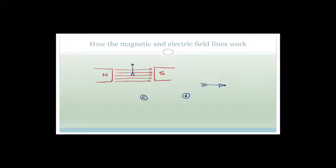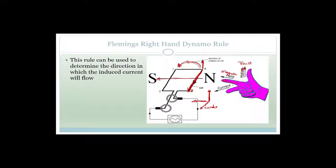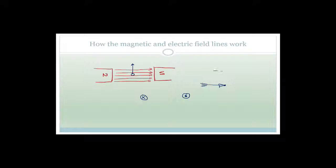So now let's apply this. We have a magnetic field from north to south. Using the right-hand rule: the field goes from north to south, the thrust or motion is going from bottom to top. Using our right-hand rule, we can see the current would be going into the page — so we draw this with a cross.